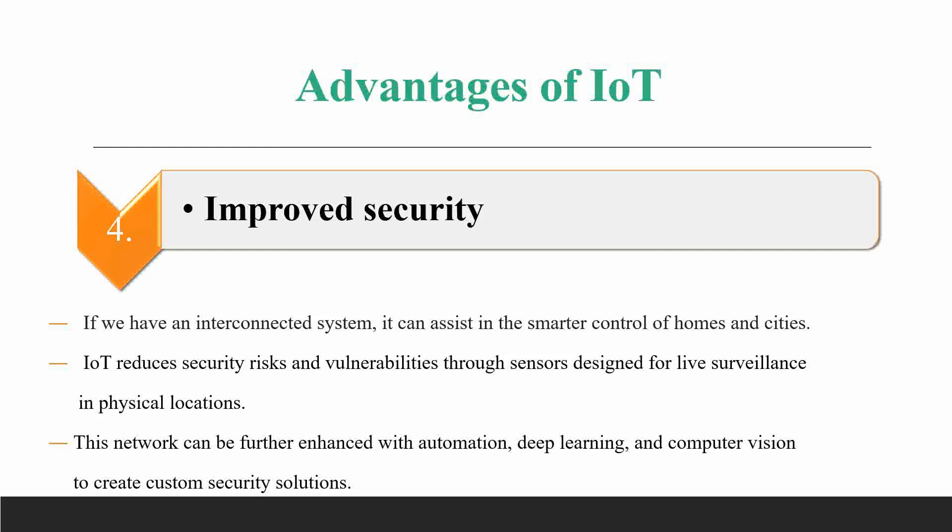We can also improve our security. If a problem happens, smart devices can detect it and send notifications. IoT reduces security risks and vulnerabilities through sensors designed for live surveillance in physical locations. Surveillance cameras can improve security, and this network can be further enhanced with automated deep learning and computer vision to create custom security solutions.